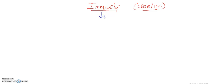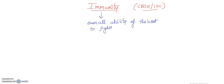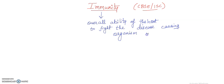So what exactly is immunity? Immunity is the overall ability of the host to fight the disease-causing organism, and this ability is conferred by the immune system. So the immune system is what gives us immunity power.